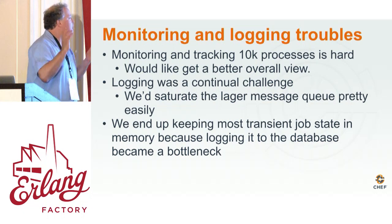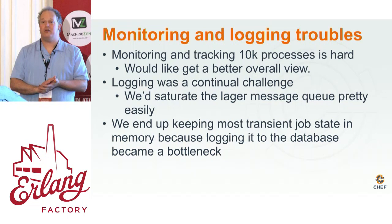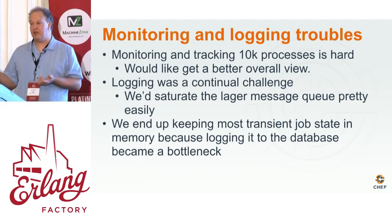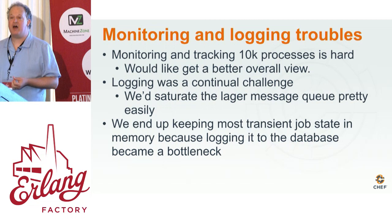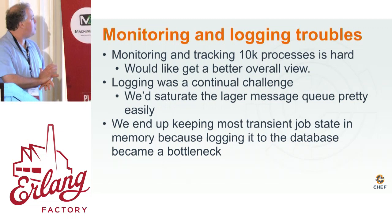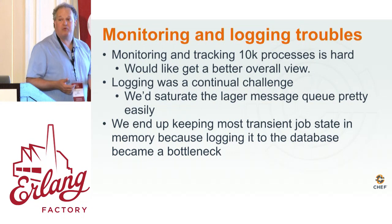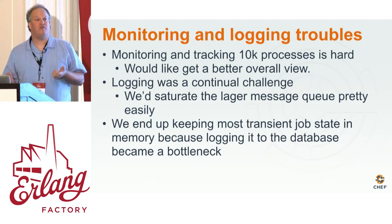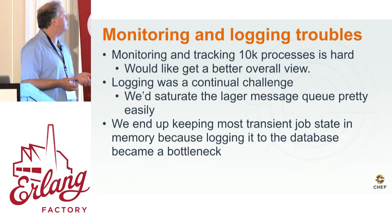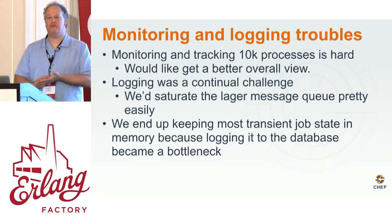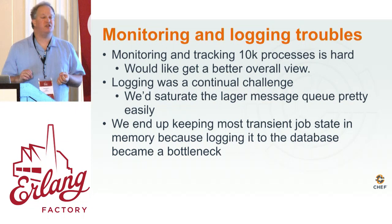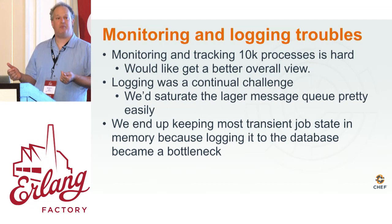Tracking 10k processes in any meaningful fashion is hard. Getting good visibility on what's happening when every one of your client processes decides to drop dead with no ordering — I never really got a good sense of how to do that. Logging: we'd saturate the logger message system. We sometimes find ourselves having to turn off logging just when things get really hairy, which may mean we're doing it wrong. Transient node state and exactly where you are in a job — we originally tried to log this to Postgres, but the rate at which those changes happened was very difficult to do effectively.